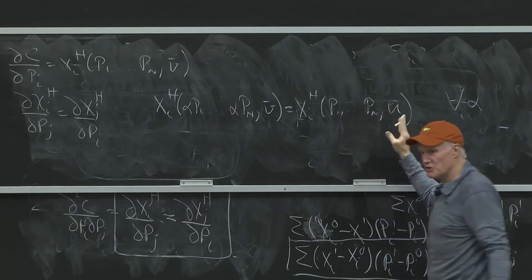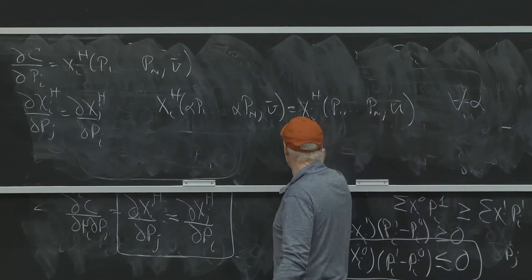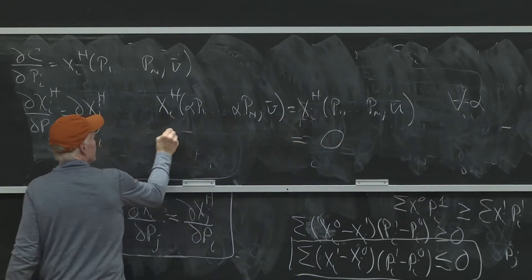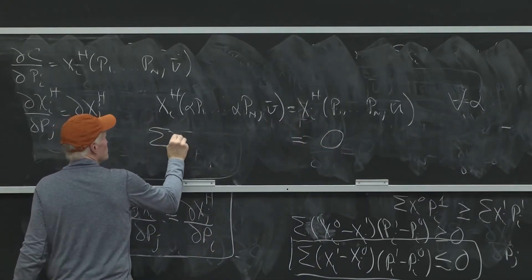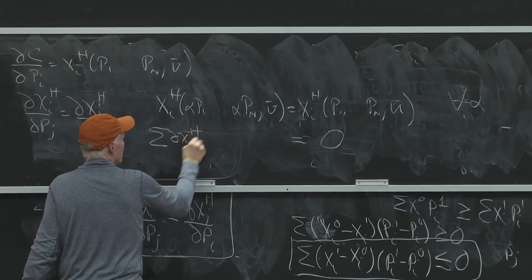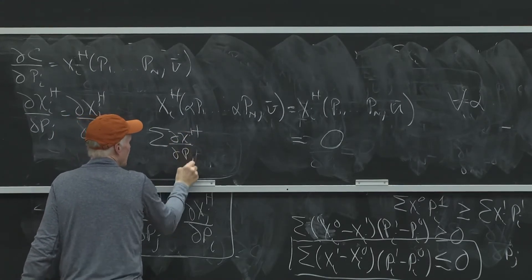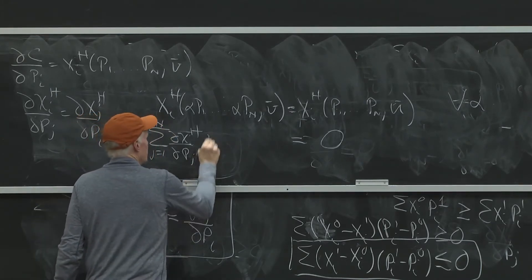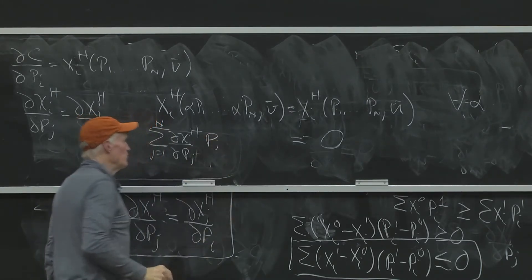Well, alpha don't even show up on this side. So this side's derivative with respect to alpha definitely is zero. And this side's derivative is the sum of partial xih partial pj, j equals 1 to n times pj equals zero.